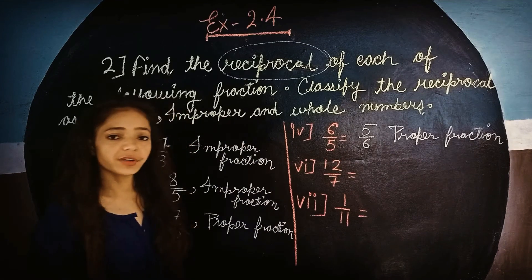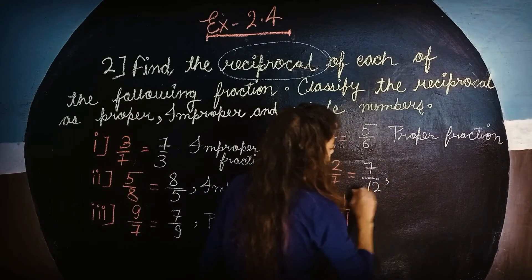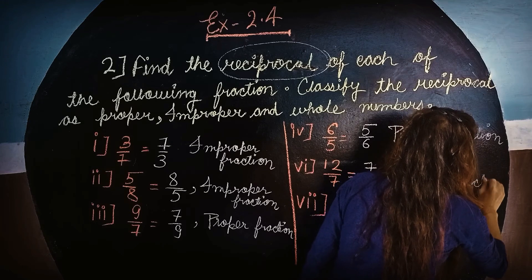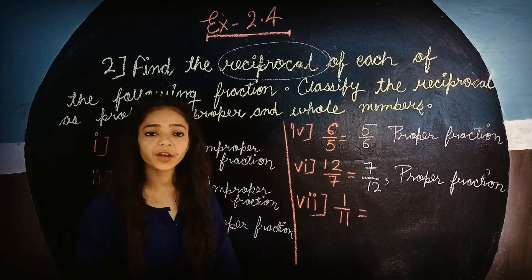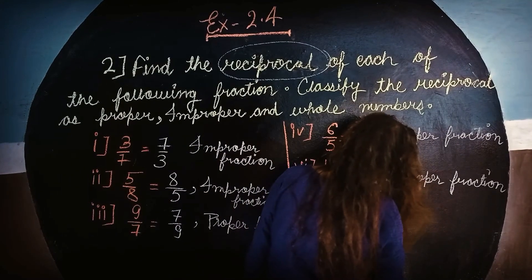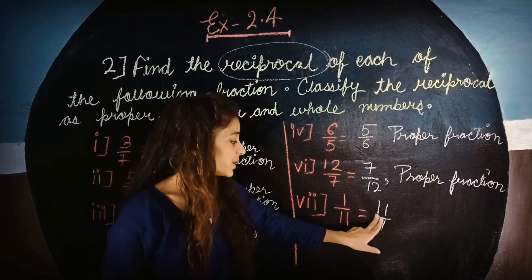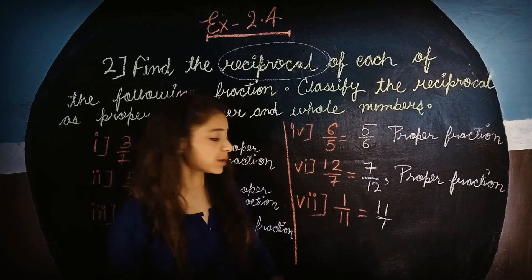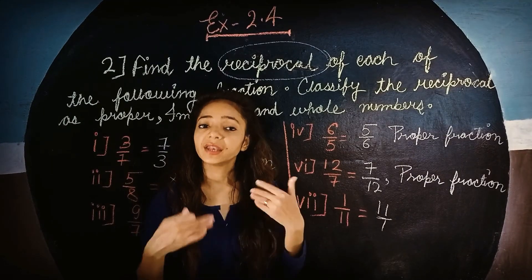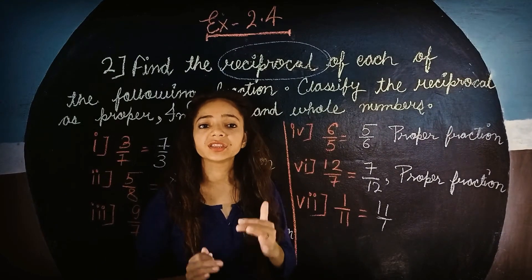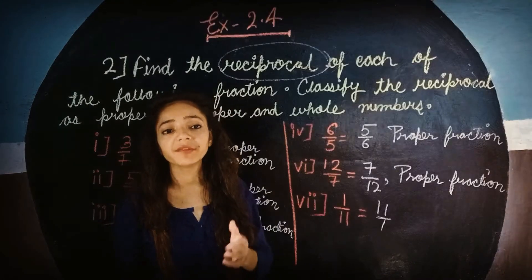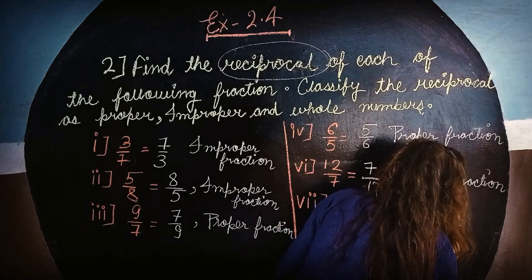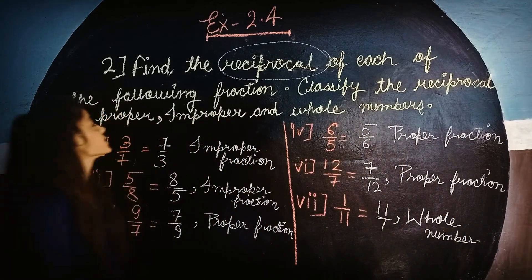The reciprocal of 12 upon 7 is 7 upon 12, which is again a proper fraction. The reciprocal of 1 upon 1 is also 1 upon 1, which is a whole number because it equals 1. We have completed the second part fully.